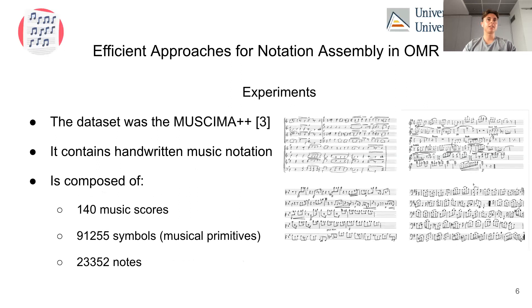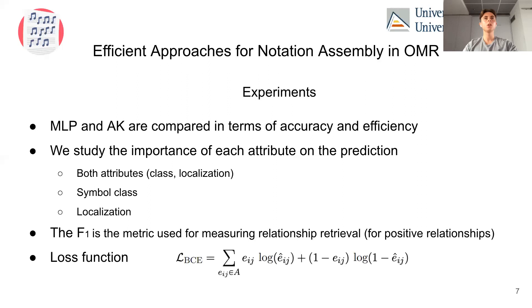For the experiments, the MUSCIMA dataset was used. It contains handwritten music notation and, as mentioned in the previous presentation, is composed of 140 musical scores, more than 90,000 symbols, and more than 23,000 notes. The MLP and the asymmetric kernels are compared in terms of accuracy and efficiency. We study the importance of each feature and test with both attributes — class and location — or only the symbol class or only the localization. F1 is the metric used for measuring relationship retrieval only for positive relationships, and the loss function is binary cross-entropy.